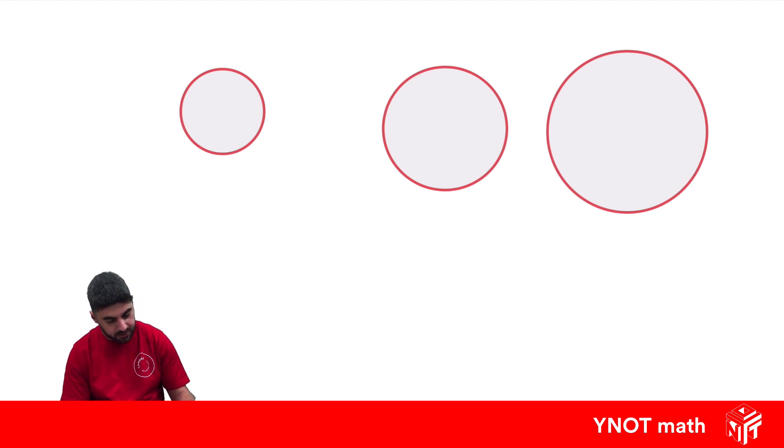So let's say the diameter of this circle was 2cm, the diameter of this one was 4cm, and the diameter of this one was 6cm.